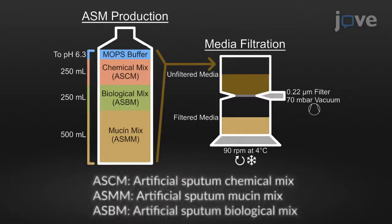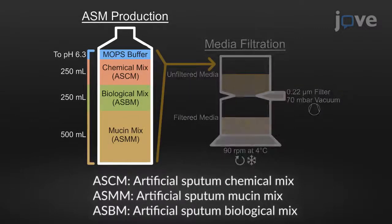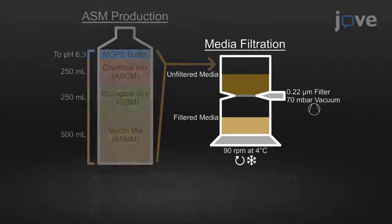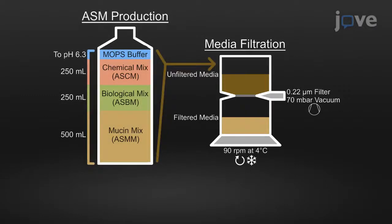An overview of the steps for artificial sputum medium preparation shows the mixing of the prepared ASCM, ASMM, and ASBM. The MOPS buffer is used to titrate the pH to 6.3, and filter sterilization of the medium is carried out in a cold room on an orbital shaker.